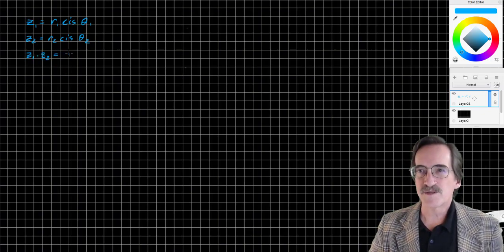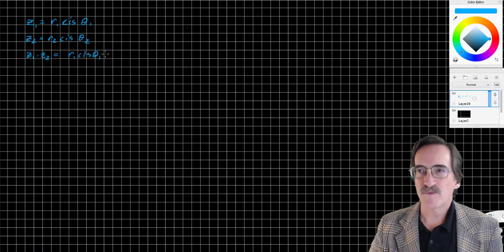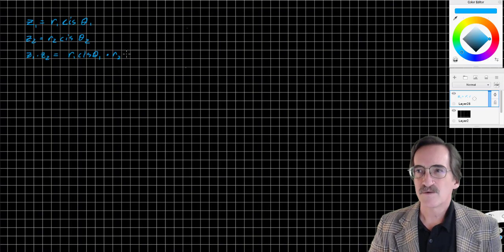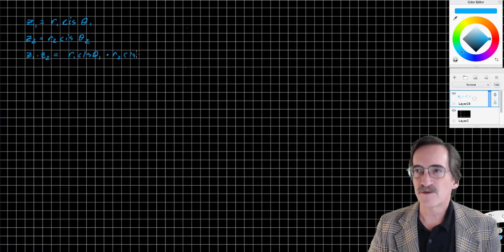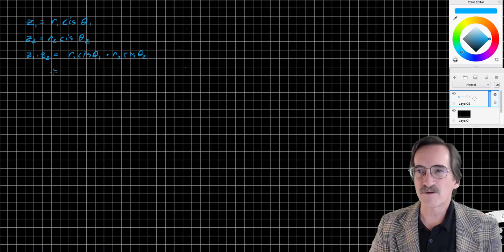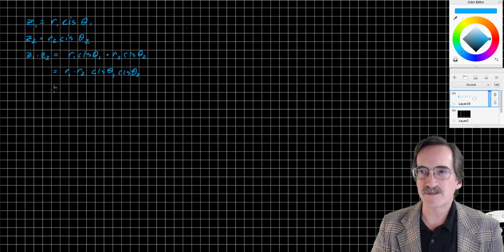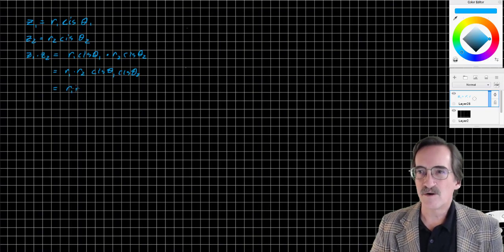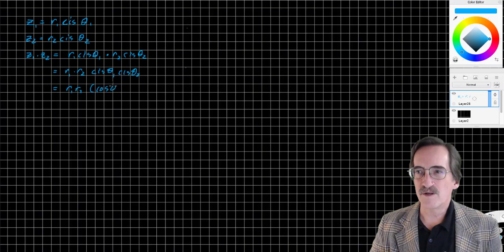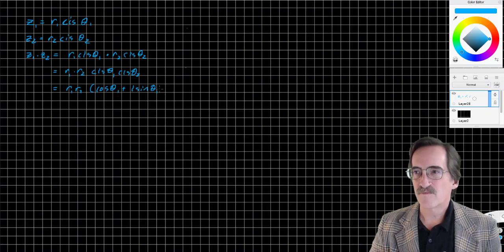According to this, that's R1 cis theta 1 times R2 cis theta 2. Rearranging a little bit, that's R1 times R2 cis theta 1 cis theta 2. Now let's expand it to what it actually means: R1 times R2, cosine theta 1 plus i sine theta 1, cosine theta 2 plus i sine theta 2.